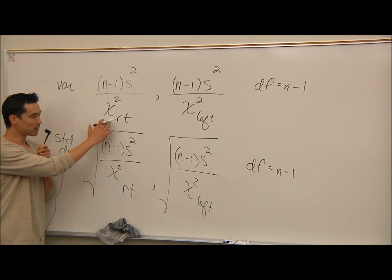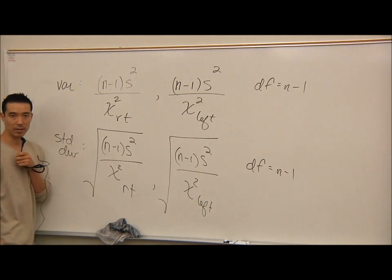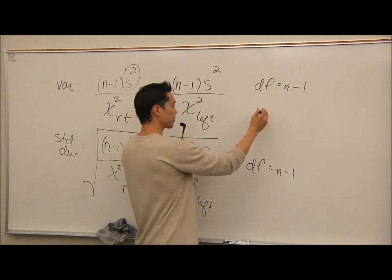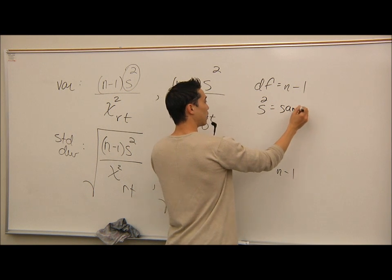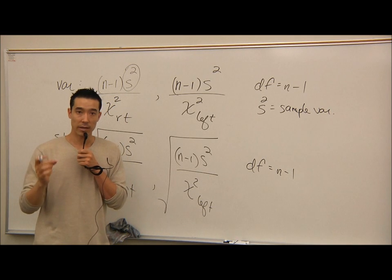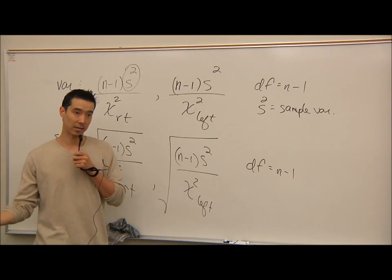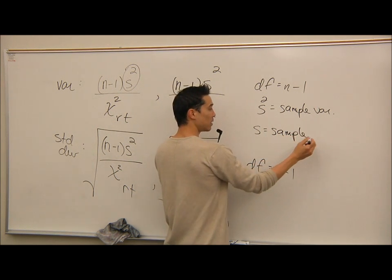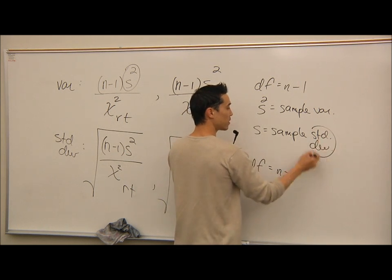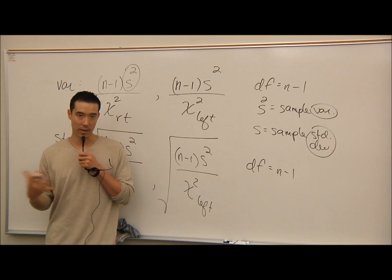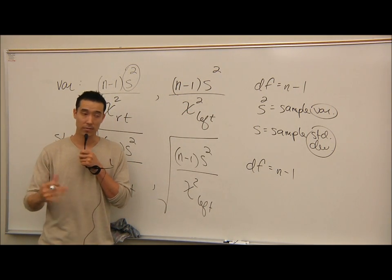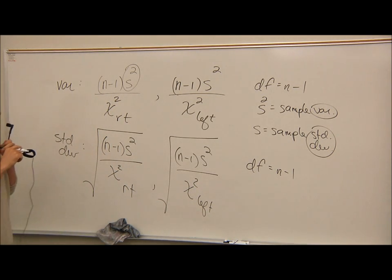It's all about identifying chi-square right, chi-square left, and then the other values have to be given in the problem — I need the sample size and s². One potentially tricky thing: s² is your sample variance. If they give you the sample variance, s² is that value and you leave it as is. But sometimes they give you standard deviation, which is just s, and then you'll have to square it in the formula. So be careful — if they give you variance that's s², no squaring needed; if they give you standard deviation, you'll have to square it.